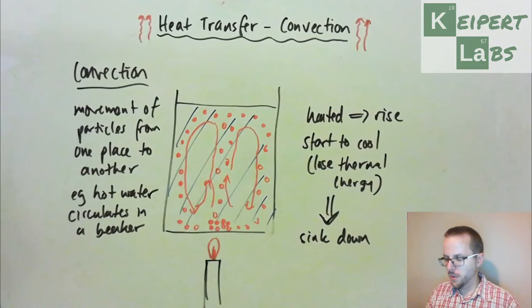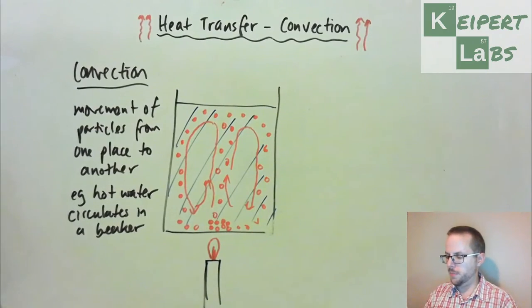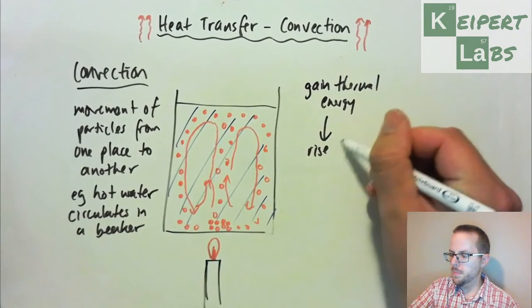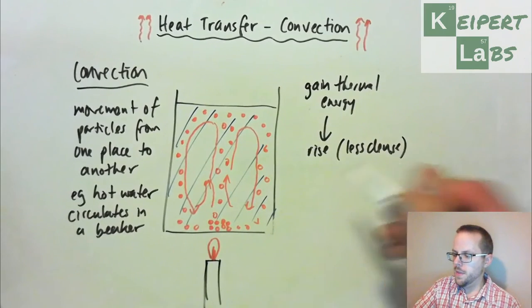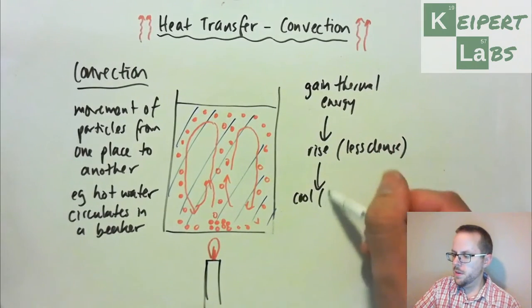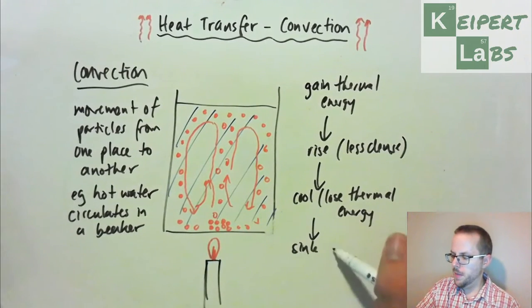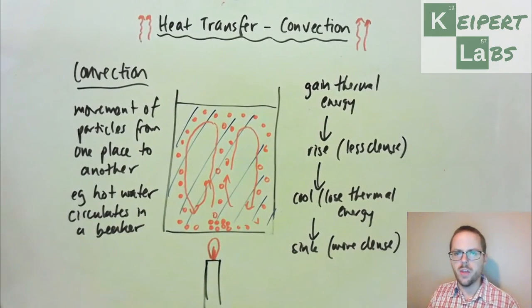Let me map this out a little bit more step by step for you. So we gain thermal energy, that is we start to rise, and that is because we're less dense. Then we start to cool, that is lose thermal energy, and so then it sinks, that is becomes more dense, goes back to its original density, which relates to how much the particles are squished together or packed together in that substance.